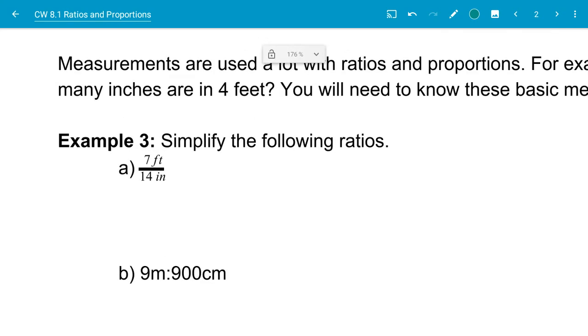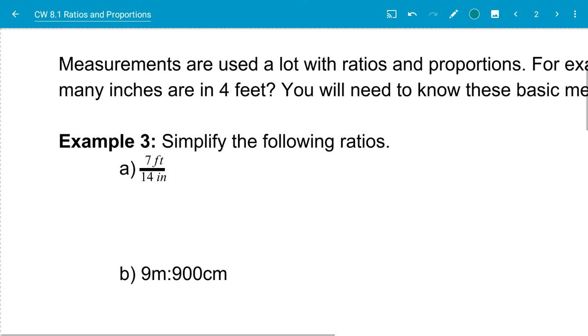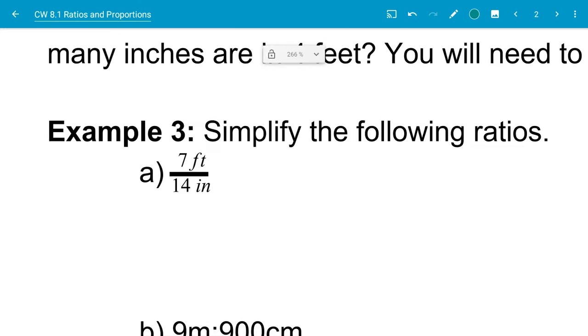Now, sometimes we'll put units with them because, like when we're looking at the bagels one, they have to have meaning to them. But as we just write a pure ratio, it's just two numbers there. So let's take a look at this first one here. We have seven feet over 14 inches.